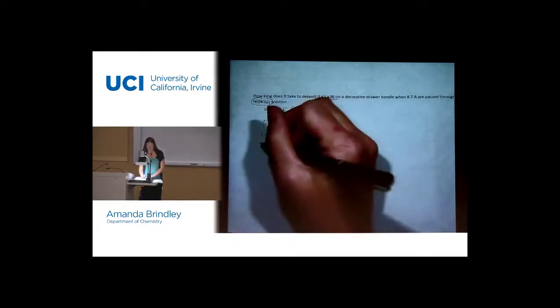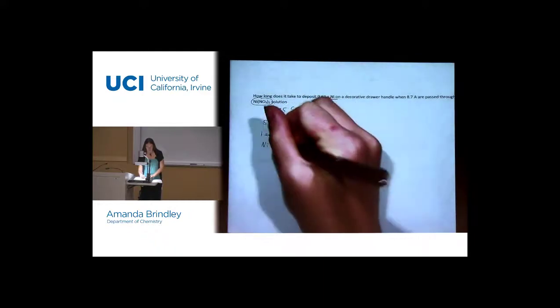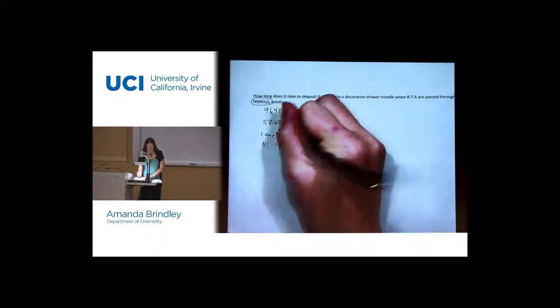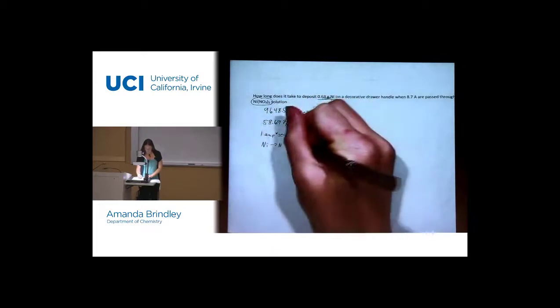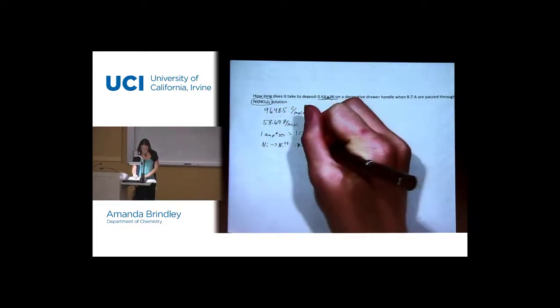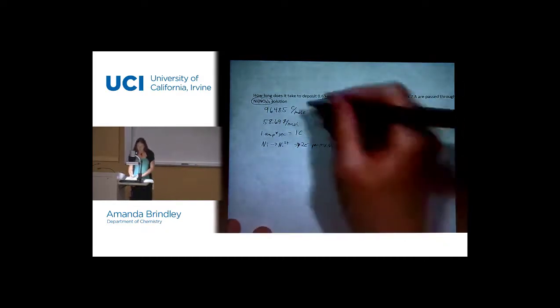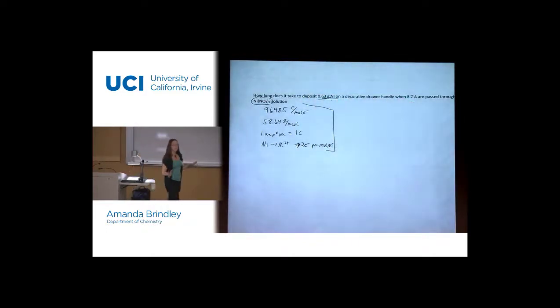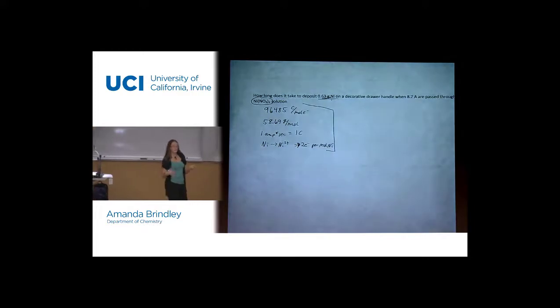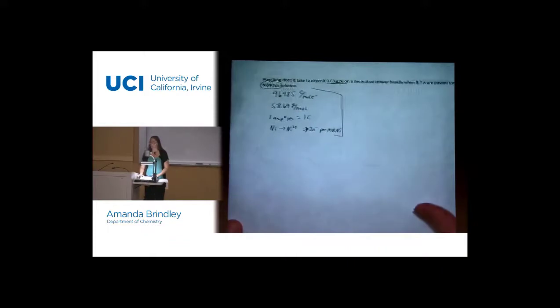The charge on nitrate is a minus one, which means the charge on nickel is a plus two. So to go from nickel to a nickel two plus, how many electrons are moving around? Two. The point of all this is just so that we have in our heads what we have to work with. Right? We may use all of it. We may use only a few things, but at least we know that that's our collection of things that we know about this system.